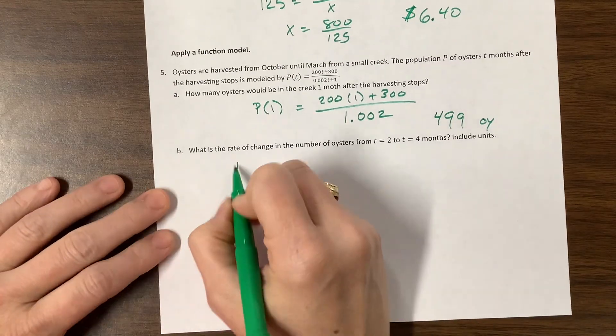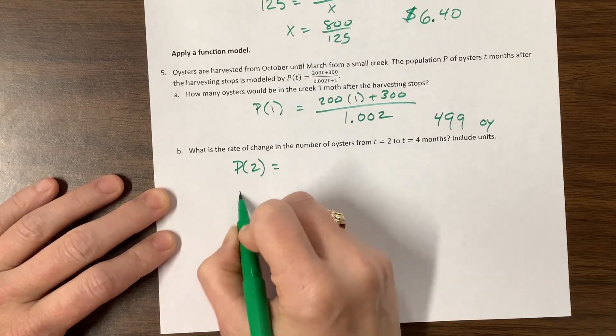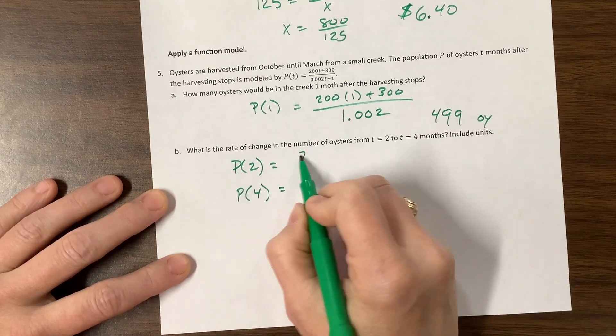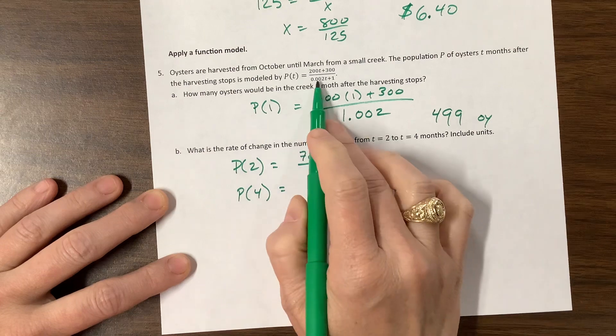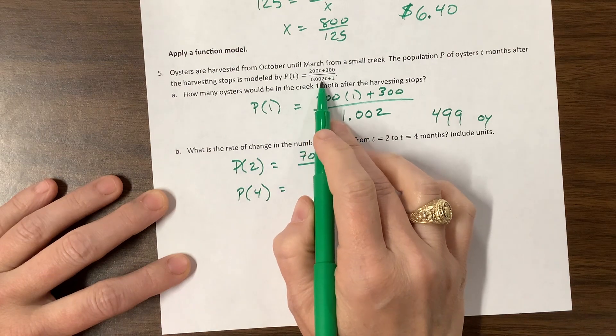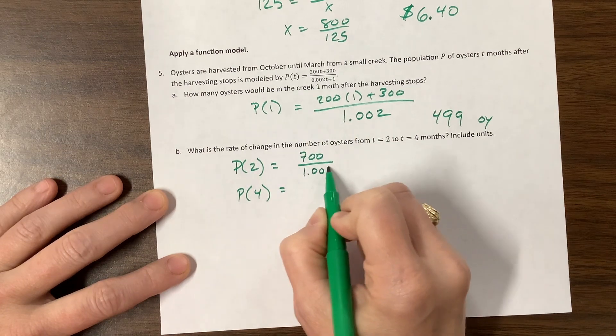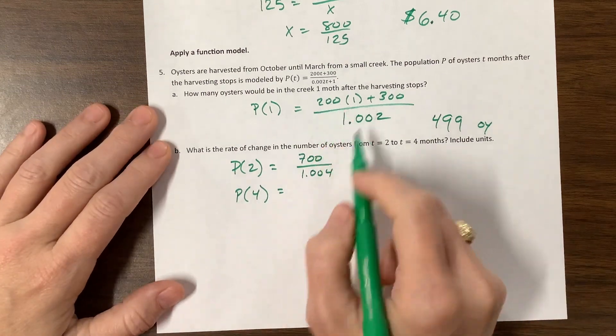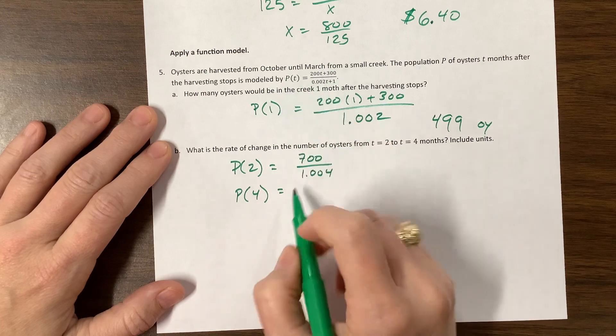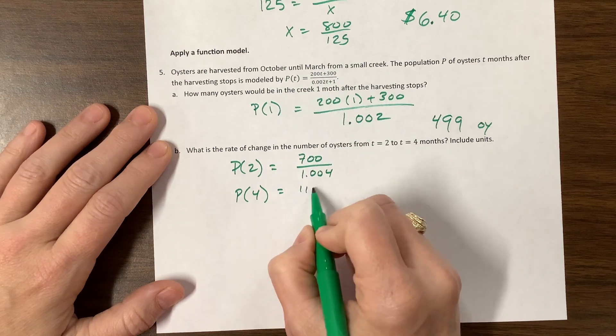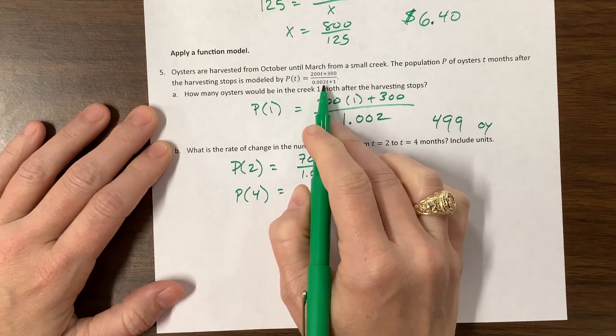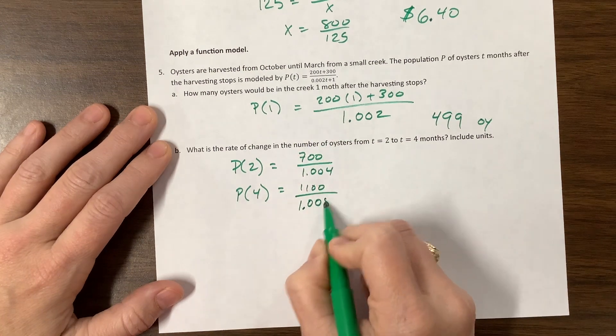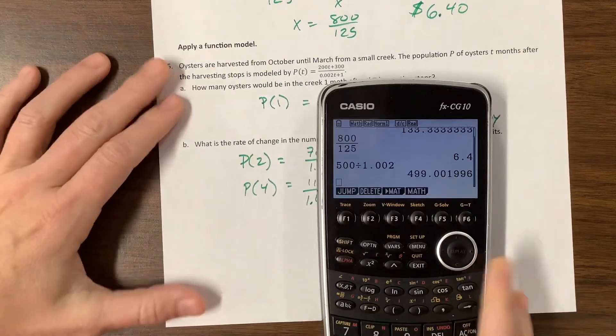The rate of change. Okay. So now we want to know P of two and we want to know P of four. Well, P of two is going to be 400 plus, it's going to be 700 over, two times this is 0.004. So it's 1.004. And then, excuse me. And then when I plug in four, I get 800 plus 300 is 1100 divided by, we'll multiply this by four. I get 0.008 at one. And I'm here. Okay.